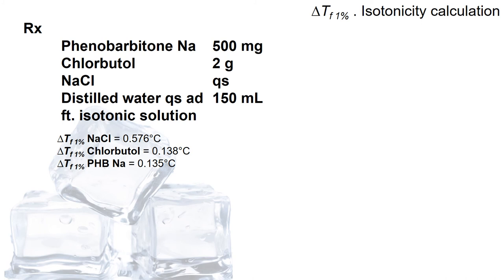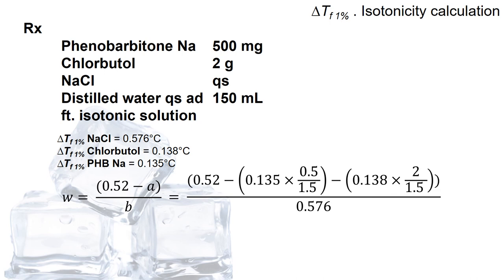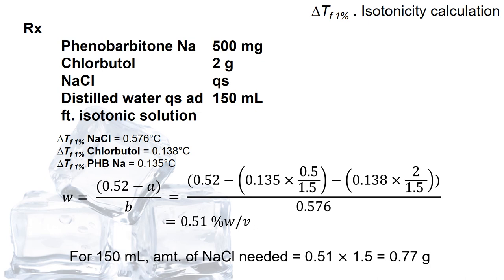What if we have more substances present? So in this case, we will substitute a with 2 values from 2 different ingredients. The first is the phenobarbital sodium, and the second item is chlorbutol. And by using the same equation, you will be able to calculate the amount of sodium chloride in terms of percentage weight per volume is equal to 0.51. And for 150 mL, the amount of sodium chloride needed is 0.77 grams.